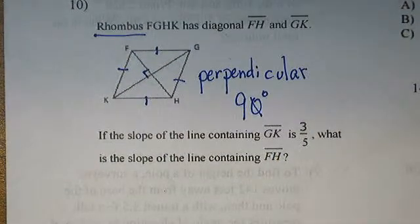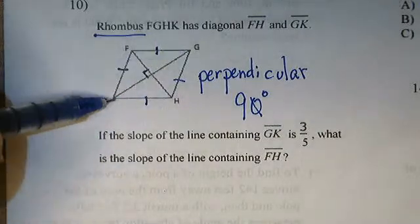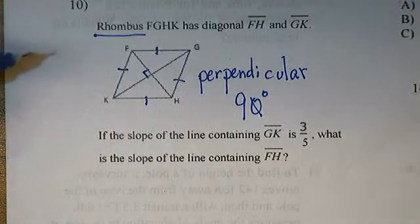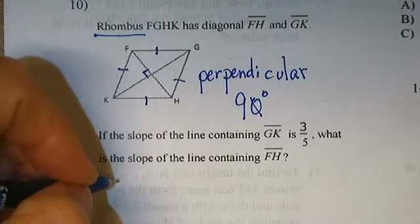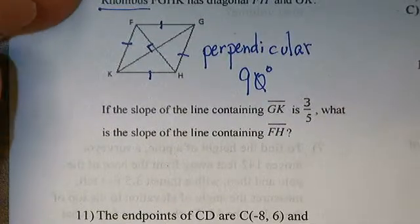In Algebra 1, you learned that the slope of perpendicular lines are negative reciprocals. So if we multiply the two slopes together, we end up with negative 1.